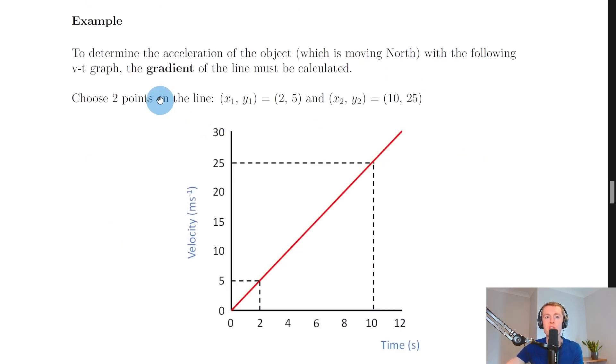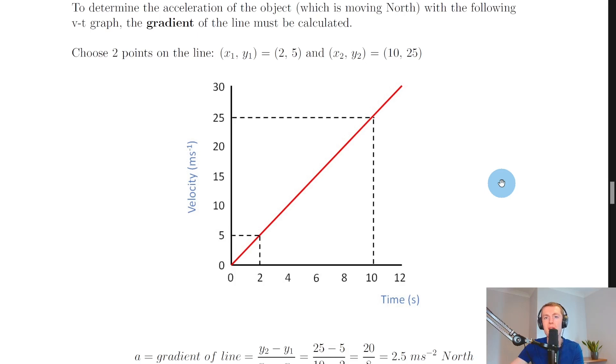So let's look at an example for how to do this. To determine the acceleration of the object which is moving north with the following v-t graph, the gradient of the line must be calculated. So here we're using the first method, which is calculating the gradient. We've got this velocity-time graph v against t, and these dashed lines have actually just been included to make it easier to choose points on the line.